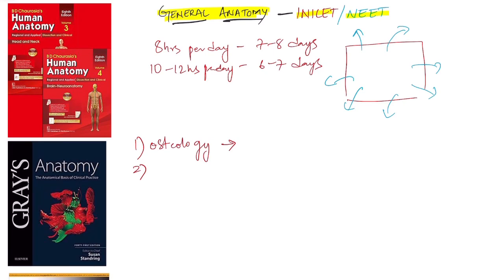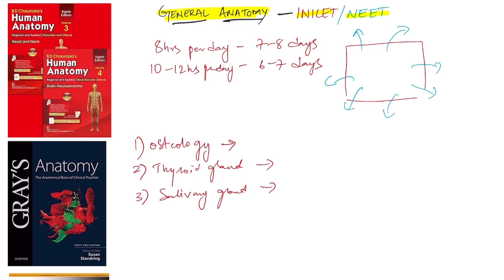The second topic in the red zone is the thyroid gland, which is important from general medicine, general surgery, and oral medicine perspectives — anatomy of the thyroid gland should not be skipped. The third topic is salivary glands — you must be utmost perfect with salivary gland anatomy, including nerves, arteries, lymph nodes, and drainage. I would also add the tongue — its development, lymph node supply, nerve supply, and muscles of the tongue — all have to be covered top to bottom.